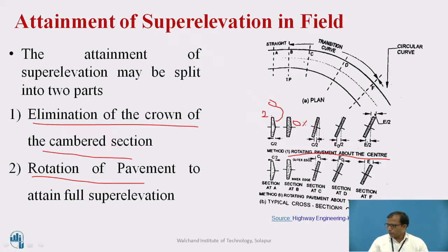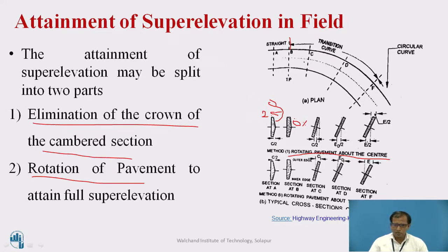From A to B, the outer half is rotated and the value is modified from 2.5% to 0%. It means the outer half is 0% and the inner half is 2.5%. Now, from point B your transition curve starts. From point B to C, you start raising the outer half. My first objective here is to eliminate the crown — meaning we have to take the outer half camber value equal to the inner half camber value.